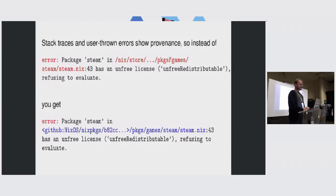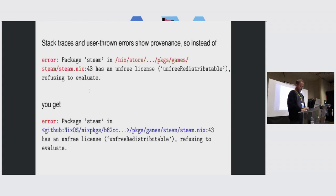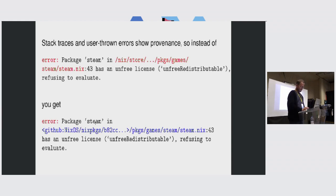But also in stack traces and user-thrown errors. For example, if I have a NixOS configuration where I'm referring to Steam, which is not allowed, previously I would get an error message like: package steam in /nix/store/... has an unfree license. Now I get: package steam in github:nixos/nixpkgs/revision has an unfree license. This is much nicer.